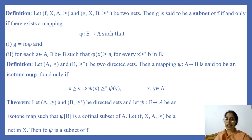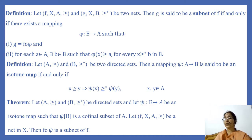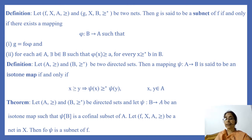Now we have another definition. Let (A, ≥) and (B, ≥*) be two directed sets. Then a mapping ψ from A to B is said to be an isotone map if and only if x ≥ y implies ψ(x) ≥* ψ(y) for x, y in A. That is, if ψ preserves the binary relations in both A and B, then ψ is an isotone map.